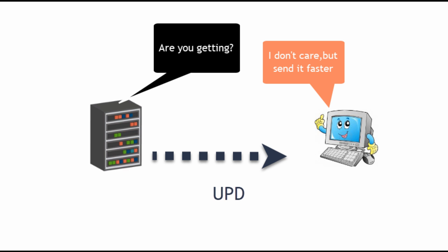TCP is like a formal interview, while UDP is like shouting at someone in a sports arena — you don't really care about if the person hears you or not.